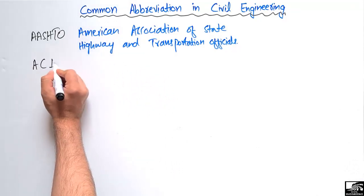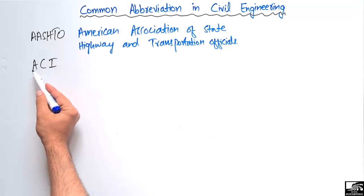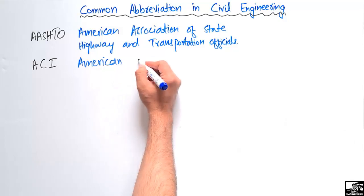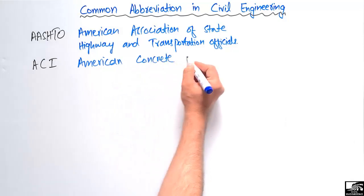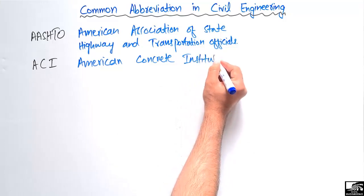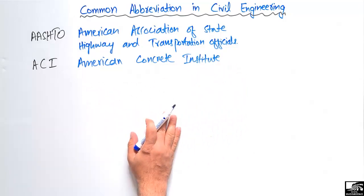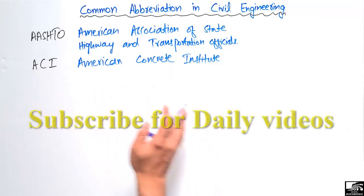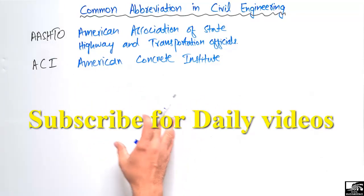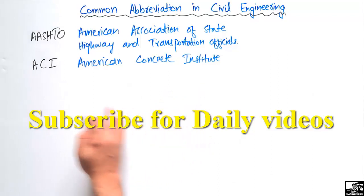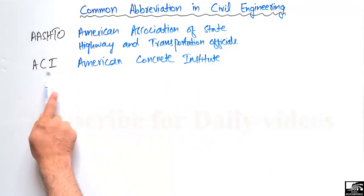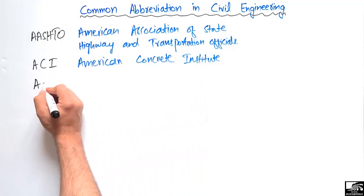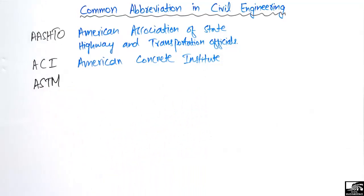The second one is ACI, which is also based in America. ACI stands for the American Concrete Institute. They have different codes for different structural members — for example, for the design of beams they provide different minimum thickness requirements, for different types of slabs they have different codes, and similarly for designing columns and retaining walls.